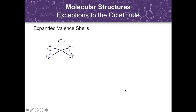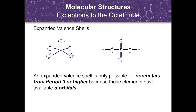The third exception to the octet rule is the expanded valence shell. Many molecules have more than 8 valence electrons around the central atom — the atom expands its valence shell to form more bonds, which releases energy. The central atom must be large and have empty orbitals that can hold additional pairs. Therefore, expanded valence shells occur only with non-metals from period 3 or higher because they have d-orbitals available. Such a central atom may be bonded to more than 4 atoms, or to 4 or fewer. Examples of these elements include phosphorus and sulfur.